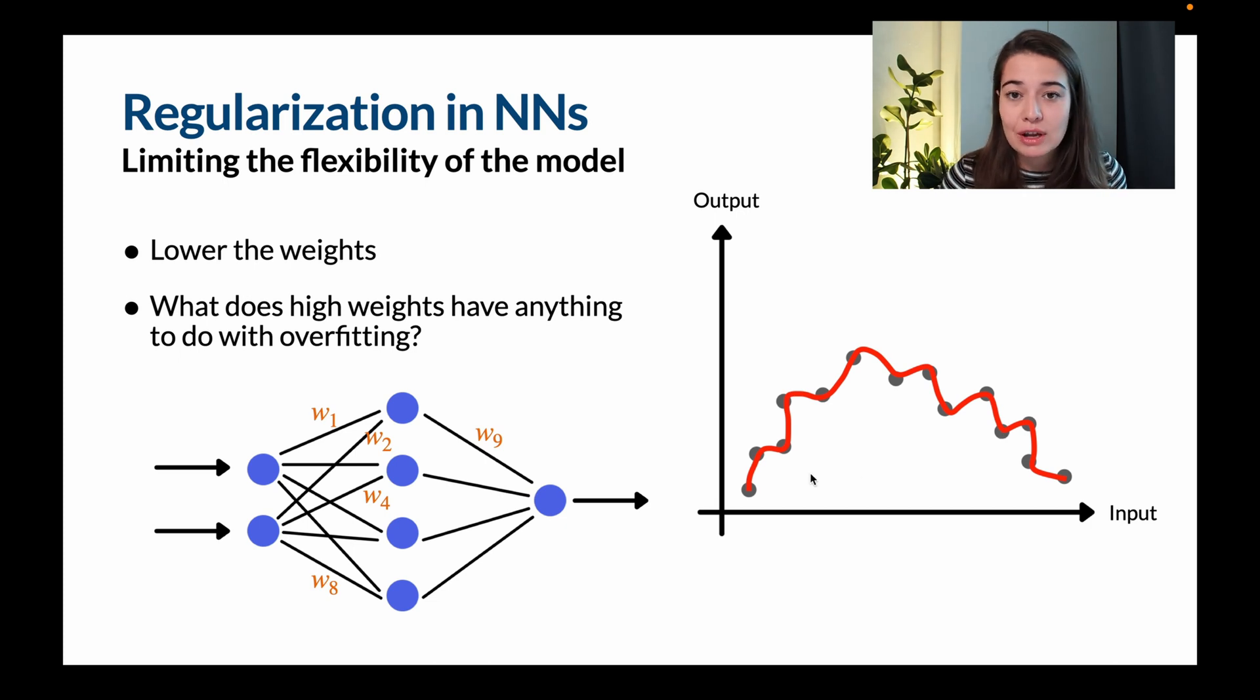And how can you do that in a neural network? If you have a really high weight for a certain input or a certain data point, that would mean that you're exaggerating the importance of that data point. So how can you avoid this if you lower the weights? So that's why while we are fighting with overfitting in neural networks, what we aim to do with regularization is to lower the weights that we have in the neural network.